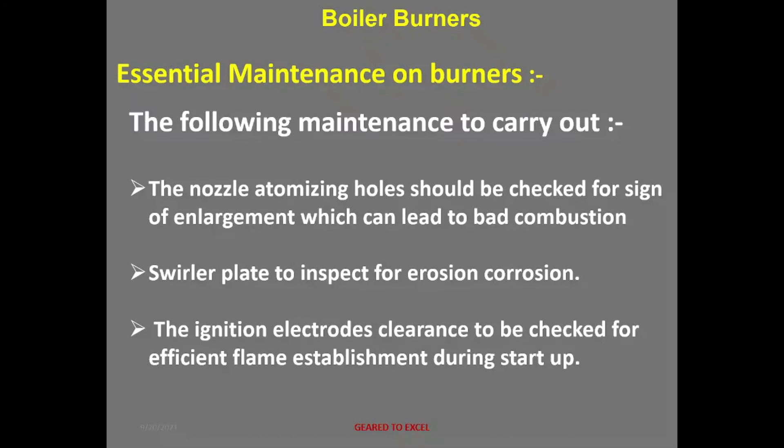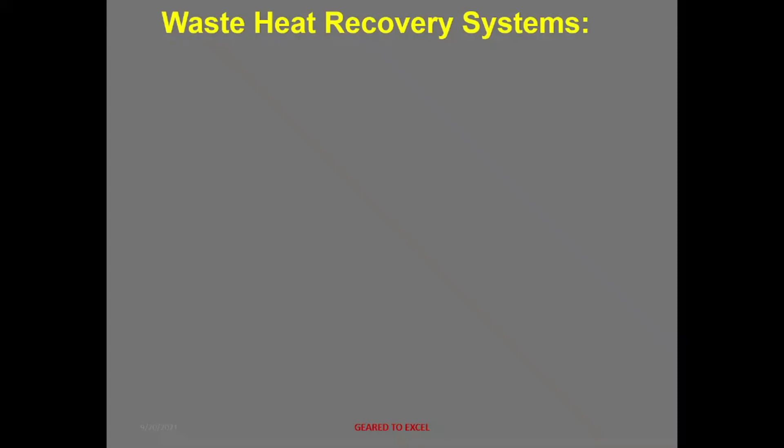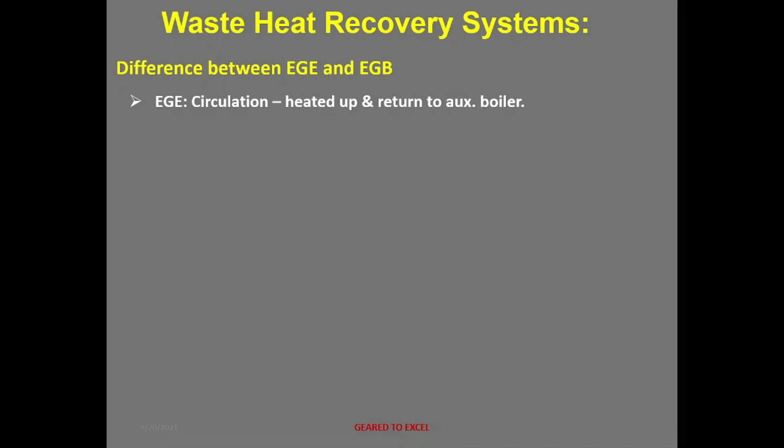Waste heat recovery system — difference between EGE (Exhaust Gas Economizer) and Exhaust Gas Boiler (EGB): the EGE circulates water, heats it up, and returns it to the main boiler. The EGB has steam storage capacity and a full set of mountings. Pinch point is also introduced as a key concept.